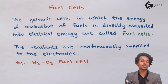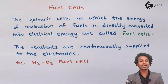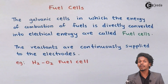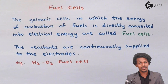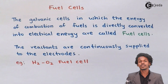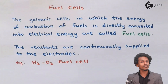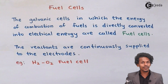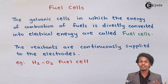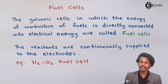There are a few conditions that must be maintained to get electricity from a fuel cell. In a fuel cell, a combustion reaction takes place — the fuel undergoes combustion to produce energy, which is then converted into electricity. One of the most common examples of a fuel cell is the H₂–O₂ fuel cell.